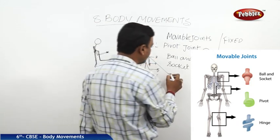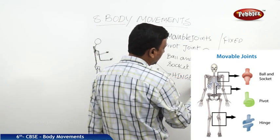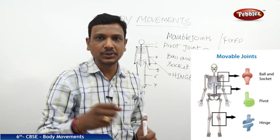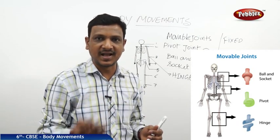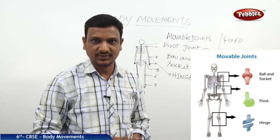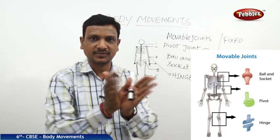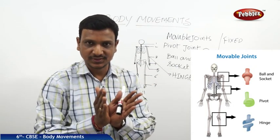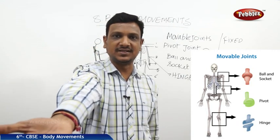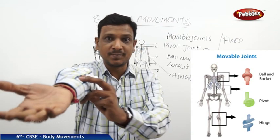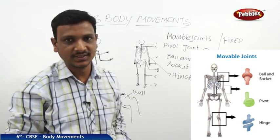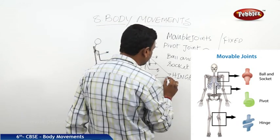The next one is the hinge joint. You know the hinges of a door — doors have hinges to open and close. Hinges are made of iron, steel, or brass, and they allow opening movement in one direction, like opening and closing a book. Hinge joints are found in the elbows and knees. Your elbow opens up to some extent — about 180 degrees — and you cannot bend your hand further because the hinge joint only allows movement till that point.